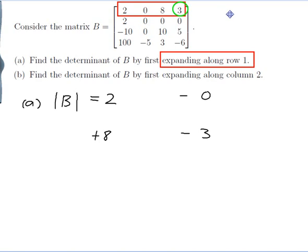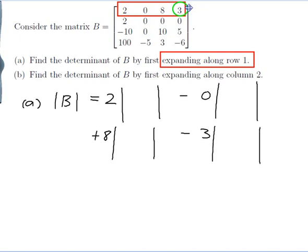I've spaced them out because you don't just put those numbers — you put a 3x3 determinant as well. So it's 2 times a 3x3 determinant, minus 0 times a 3x3 determinant, plus 8 times a 3x3 determinant, minus 3 times a 3x3 determinant.